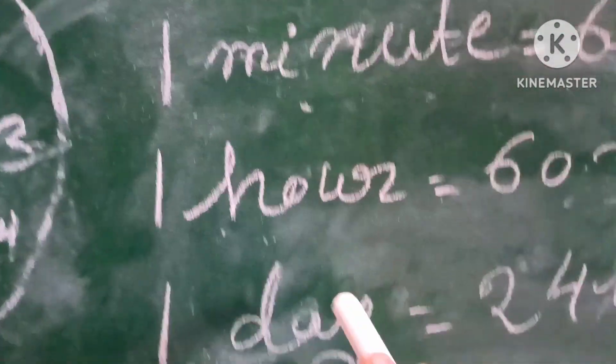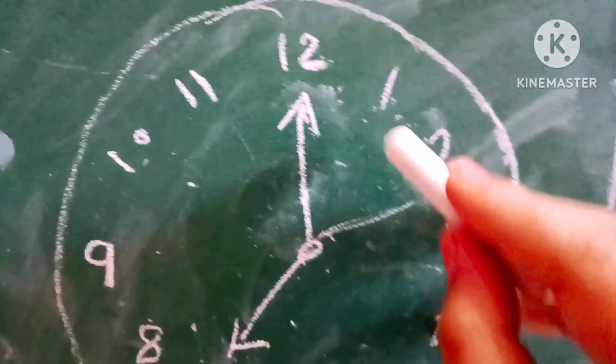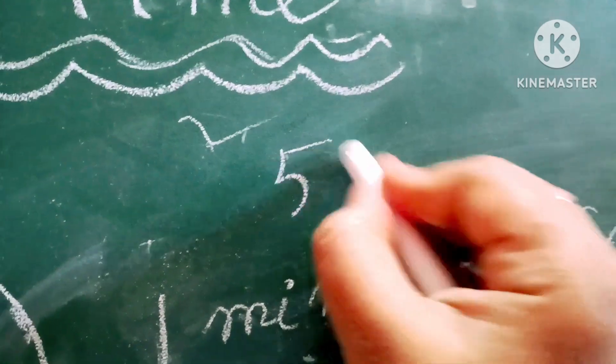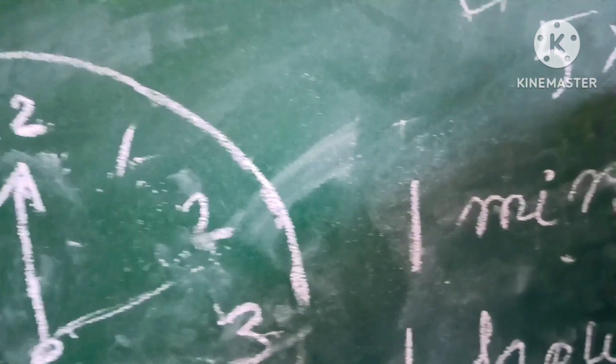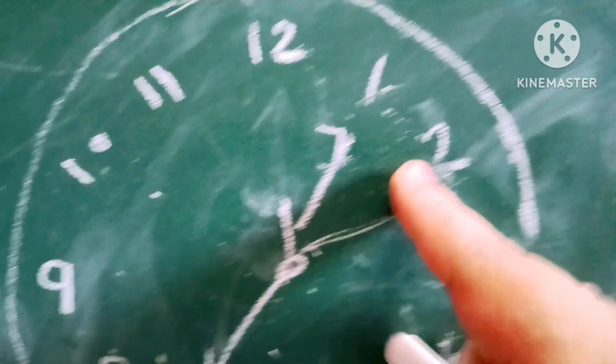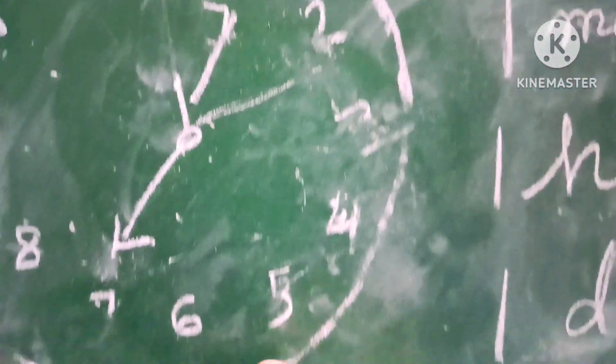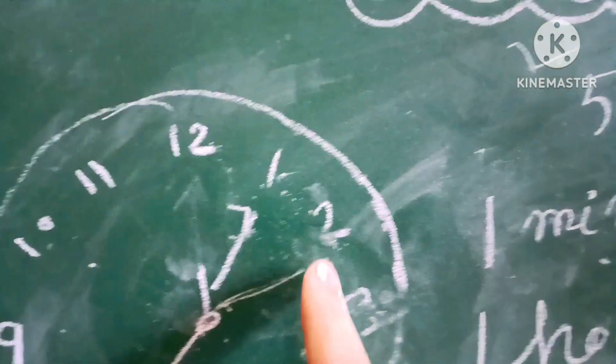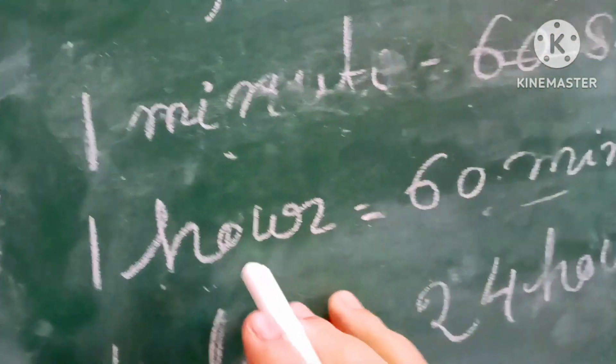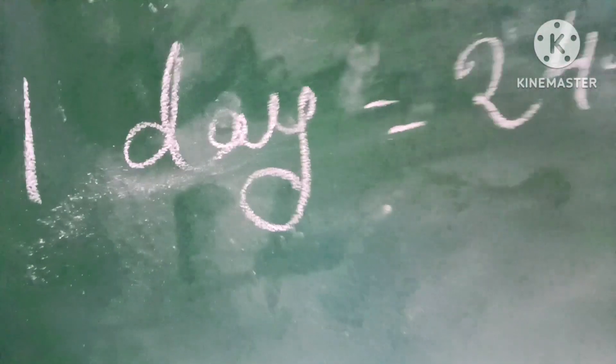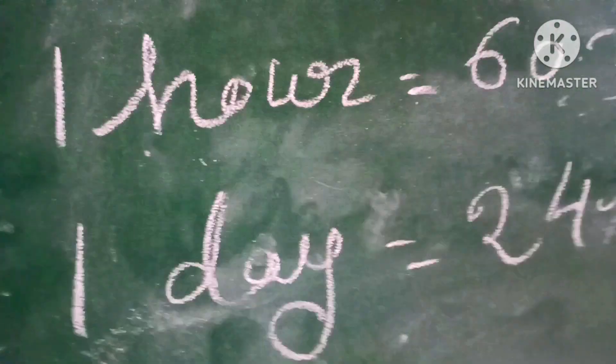Now let's move to the next concept. We know that 1 hour equals 60 minutes. Going further: 5 multiplied by 12 equals 60 minutes per hour. And there are 24 hours in one day.